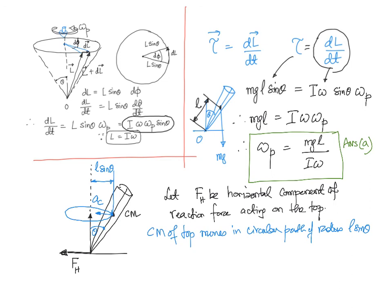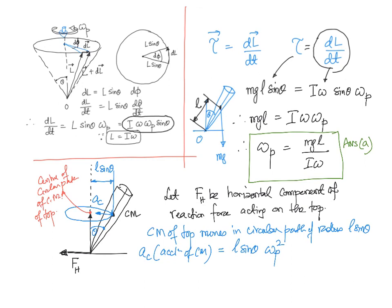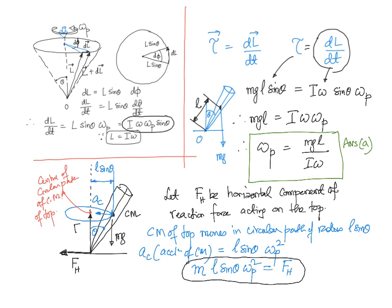The center of mass has a centripetal acceleration a_c directed toward the center of the circular path. The acceleration a_c equals the radius times the precession angular speed squared: a_c = l·sin θ·ω_p². By Newton's second law, m·a_c equals F_h, the horizontal component of the reaction force, since all other forces — mg and the vertical reaction F_v — act vertically.